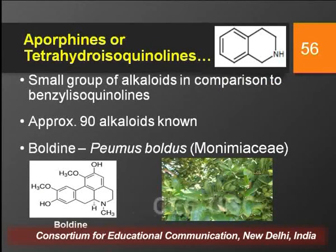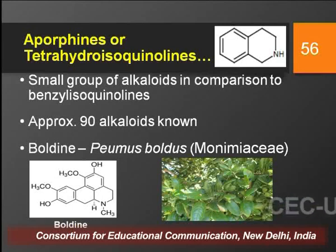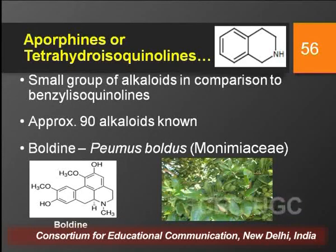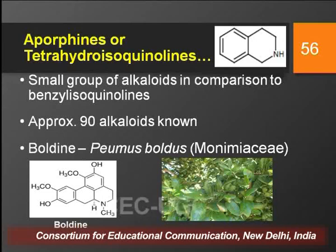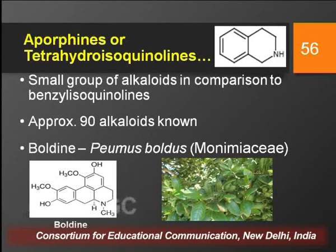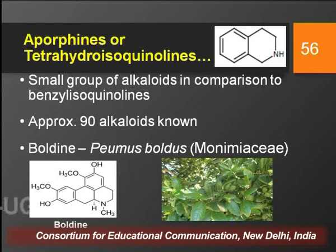The second subclass is aporphine alkaloids, also known as tetrahydroisoquinoline alkaloids. In these, the heterocyclic ring is saturated with no double bonds remaining. They form a relatively small group within isoquinoline alkaloids — around 90 aporphine alkaloids have been identified. The common example is boldine, isolated from Peumus boldus of the Monimiaceae family, and its aporphine nucleus is clearly visible in the structure.